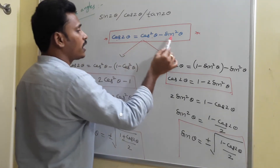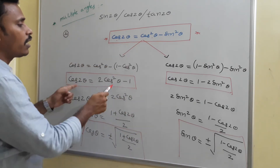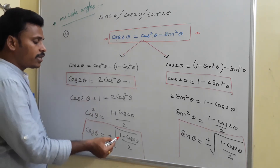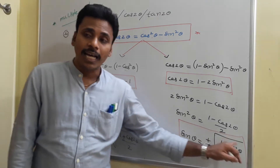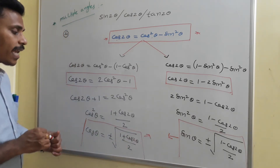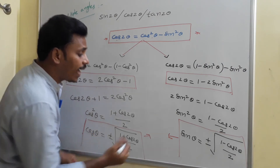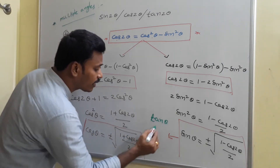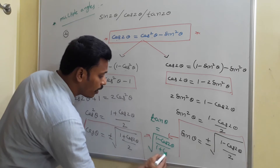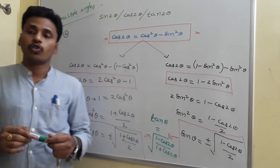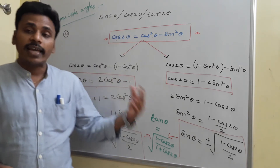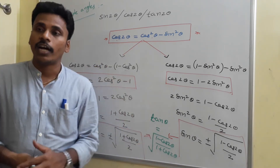Cos 2 theta equals cos squared theta minus sine squared theta, and this can be split in two ways. Additionally, cos squared theta equals (1 plus cos 2 theta) divided by 2 and sine squared theta equals (1 minus cos 2 theta) divided by 2. From these, there is a chance to write tan theta as the square root of sine over cosine, which gives tan theta equals the square root of (1 minus cos 2 theta) divided by (1 plus cos 2 theta), when cos 2 theta is known.